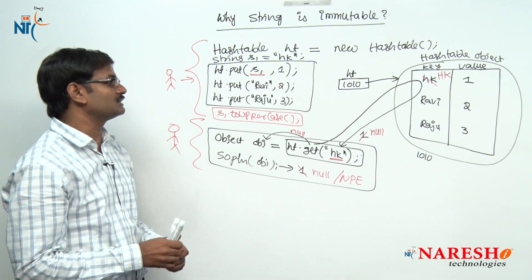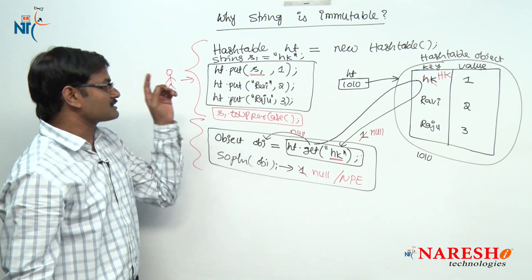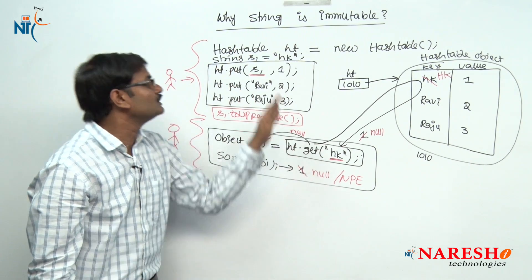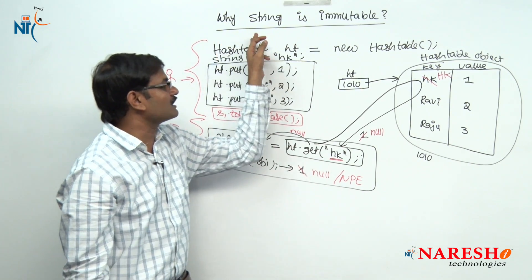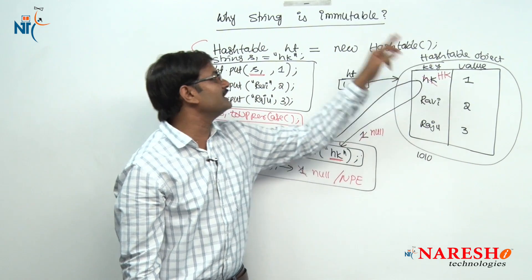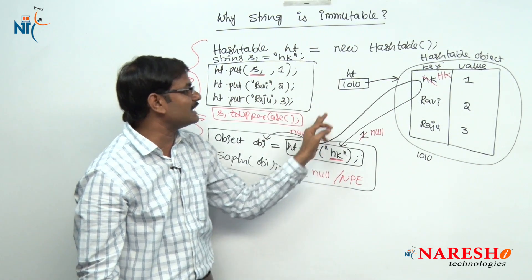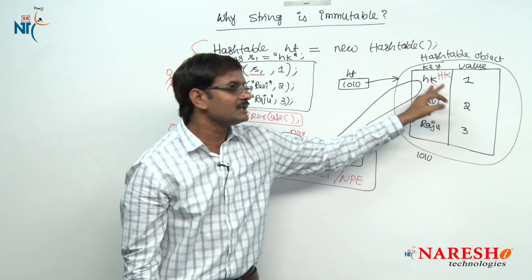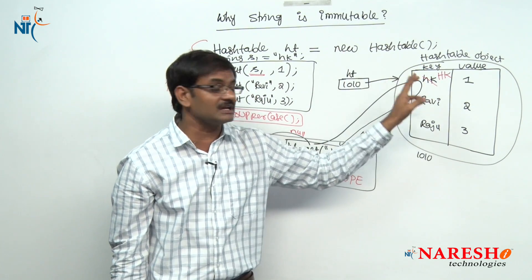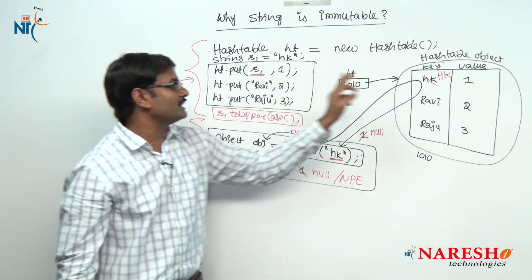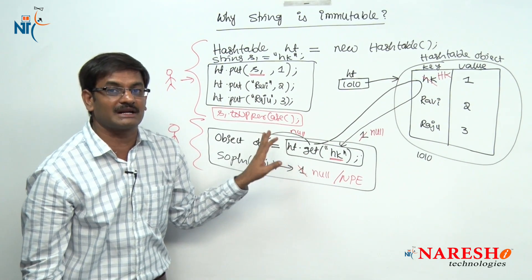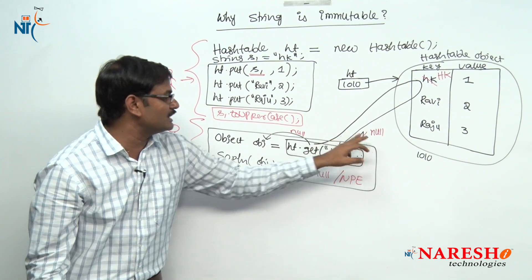Final conclusion: a string object is given as immutable to store a string object as a key inside a Map object. If it is an immutable object, the data will not be stored in the same object. After storing the key, the key is available in its original case — even though you modified it, there is no effect at retrieval time. You are getting the value correctly — the value 1 will come.